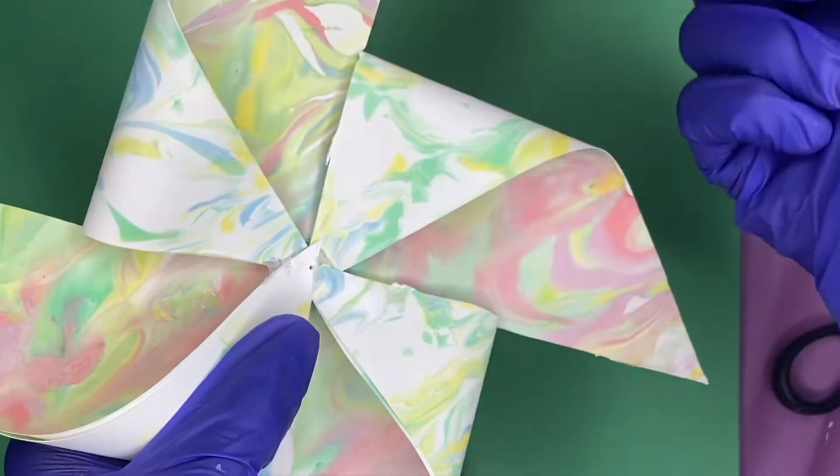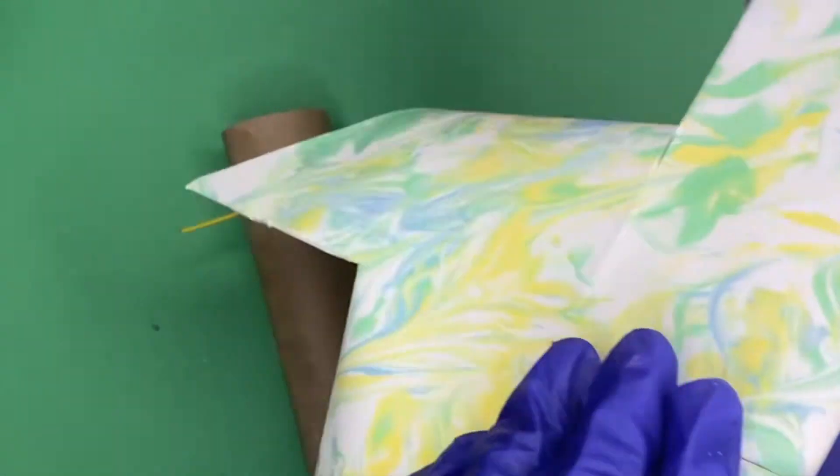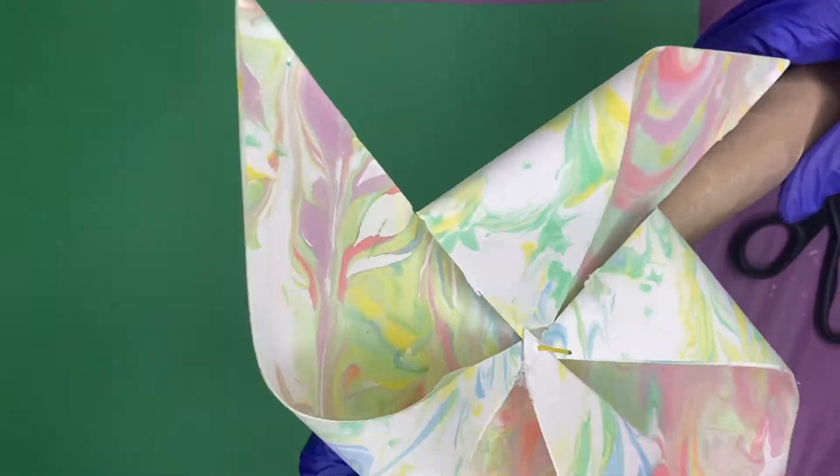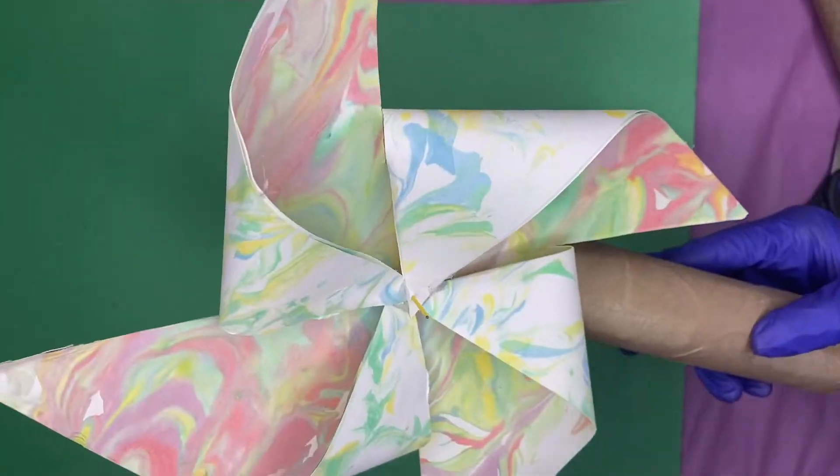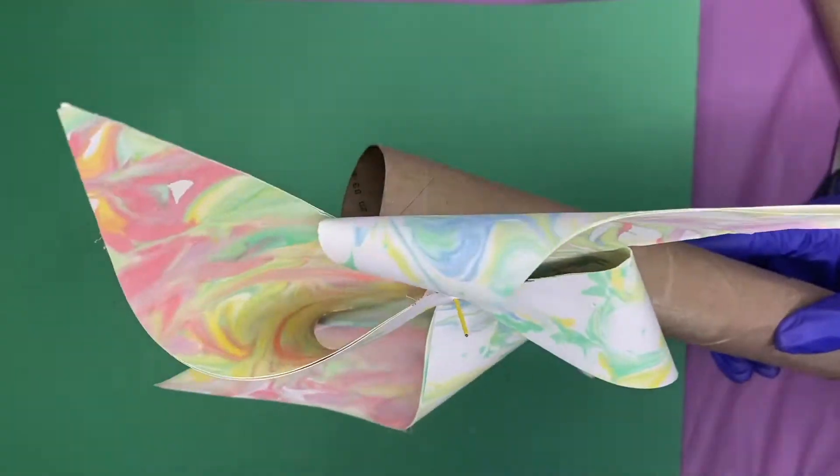And then I take the pinwheel and I'm opening up the hole a little bit with my tack, and when I feel that it is big enough, I'm going to slide it on my paper clip and it will be able to spin just like this.